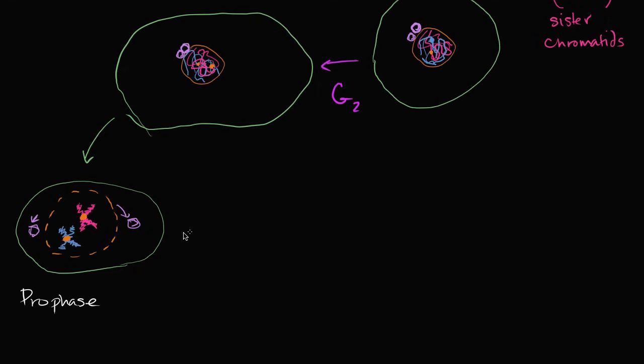Now in the next phase, let me draw my cell again. In the next phase, your nuclear membrane is now gone and the chromosomes start lining up in the middle of the cell. So you have the blue one right over here. The blue one that's one sister chromatid. Here's another sister chromatid. And they are connected at the centromere.